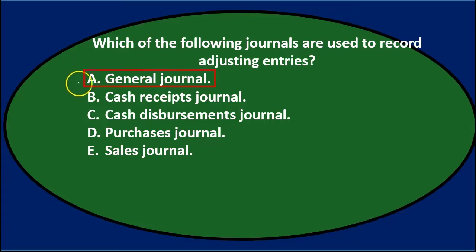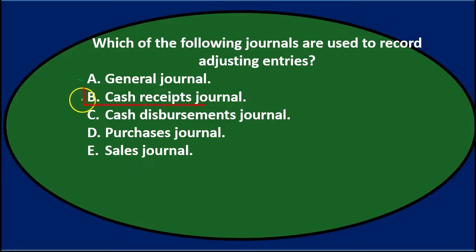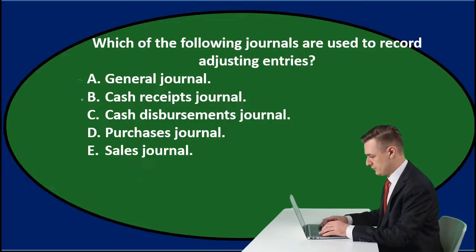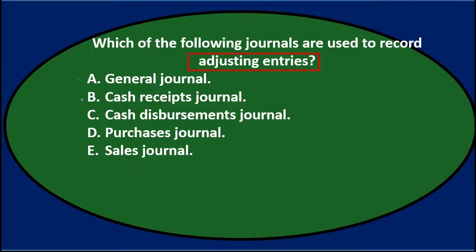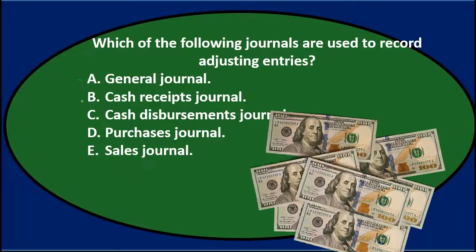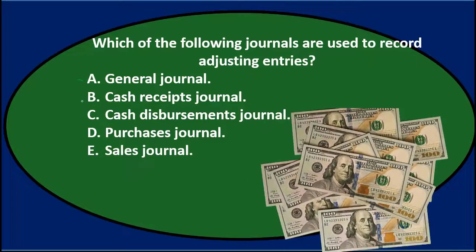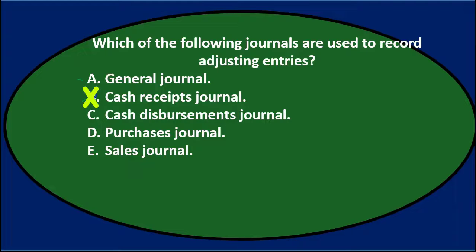A says the general journal — that's the default journal we use when something doesn't fit into any other type. I'll keep that for now, because adjusting entries aren't a normal journal entry process; they happen at the end of the period. B says cash receipts journal — adjusting entries typically don't involve cash, since cash doesn't require a timing adjustment. So that's not it.